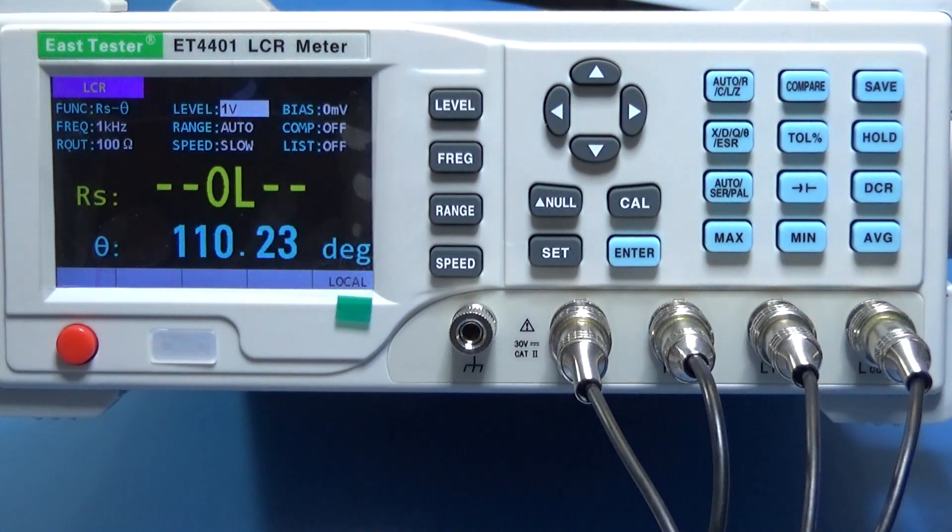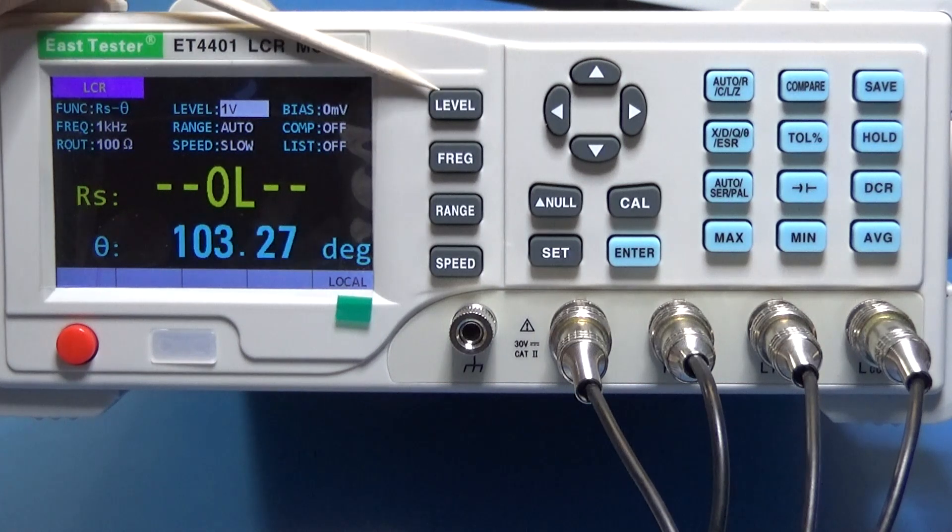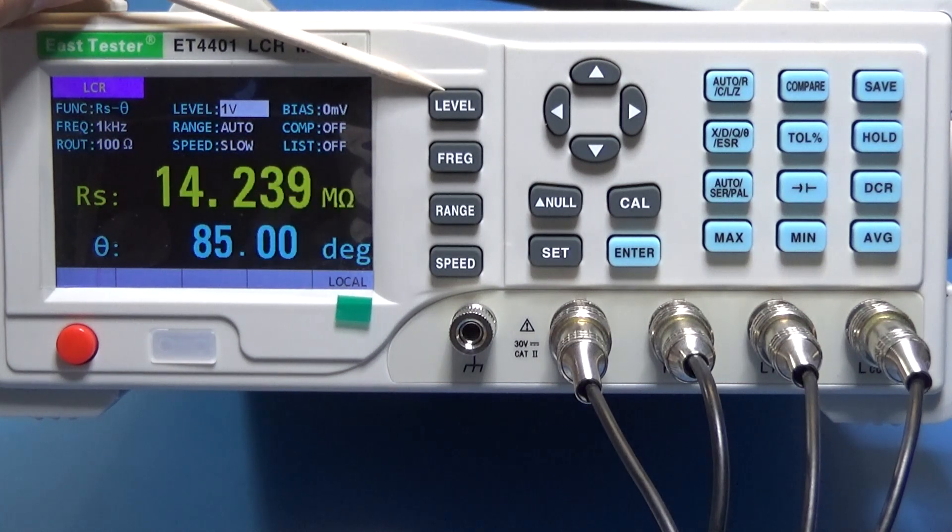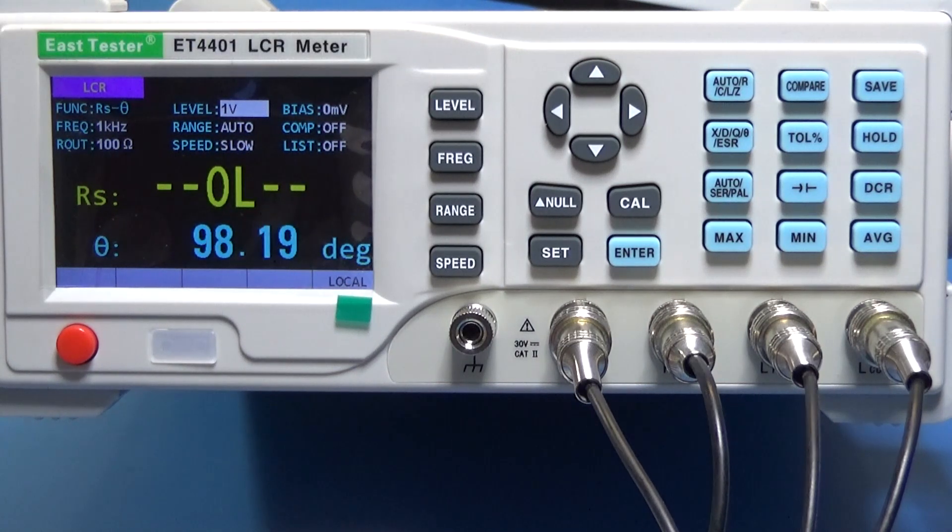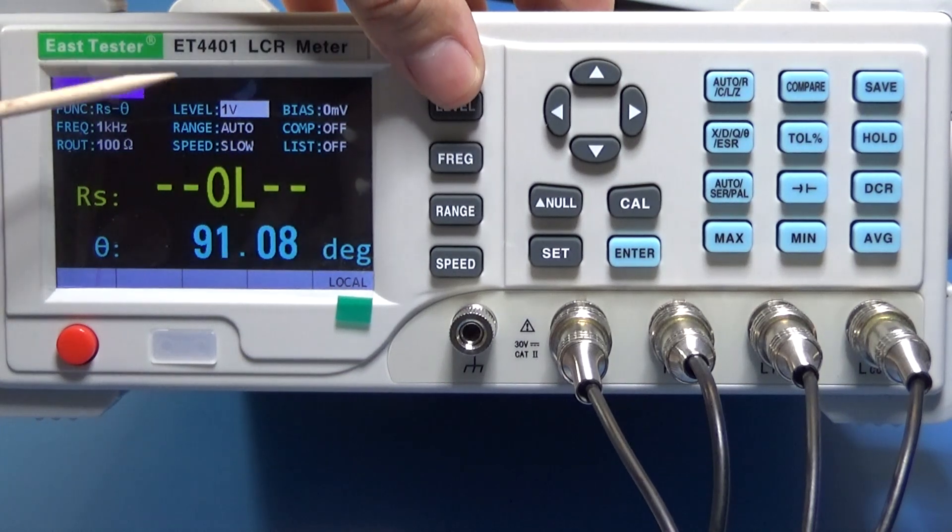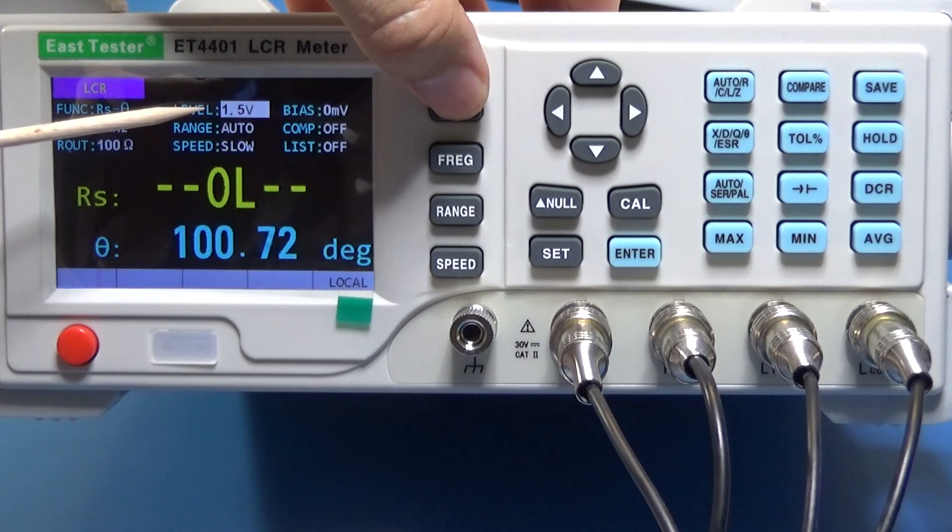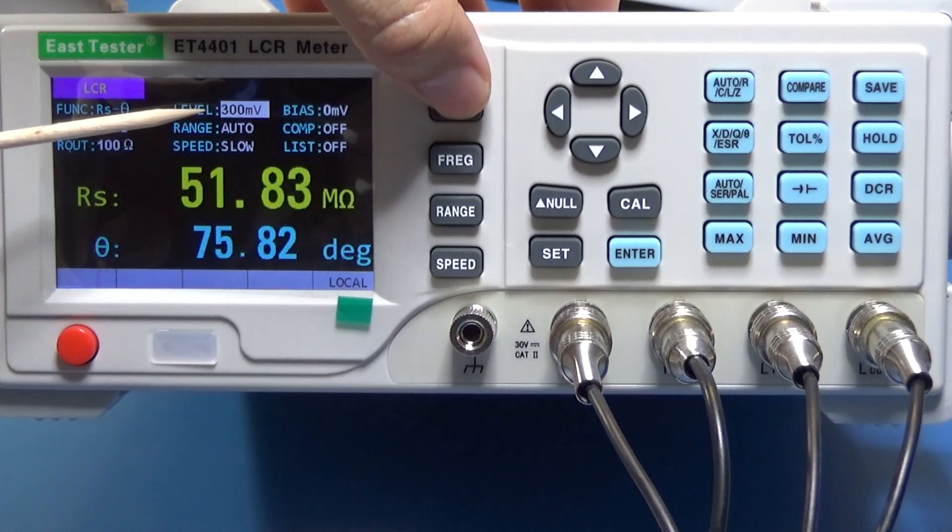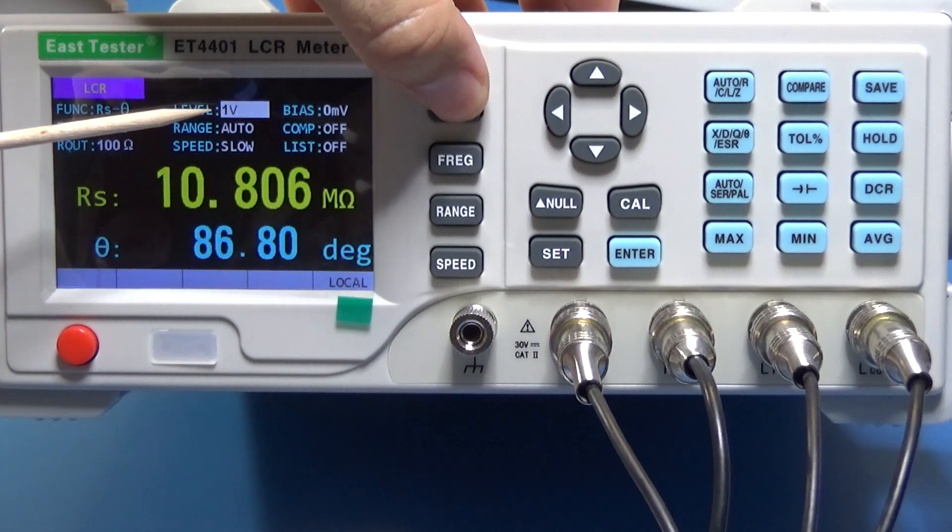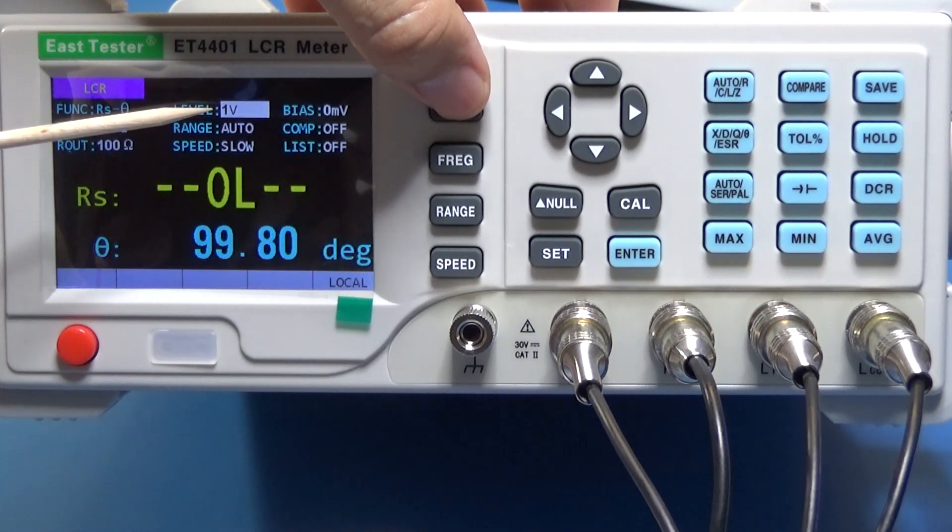Let's go with the buttons. First one is level. Level means the voltage level. 1 volt, 1.5, 2 volts, 100 millivolts, 300 millivolts, 600 millivolts, 1 volt. Most of the tests in this kind of devices and in some data sheets will be in 1 volt RMS.